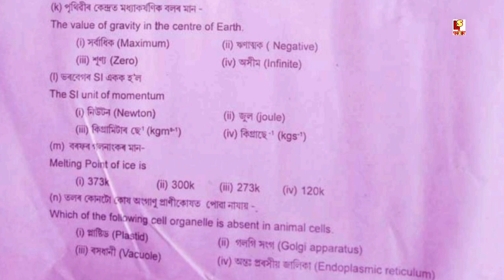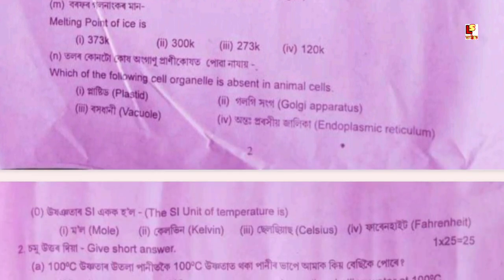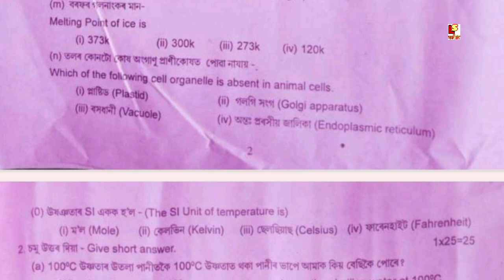Options: gold, ghee, hunger, sugar. Next: the SI unit of temperature. Options: Kelvin, Celsius, Fahrenheit.